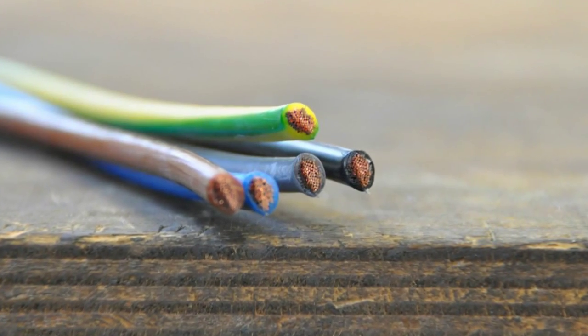Electric current is electric charge in motion. It can take the form of a sudden discharge of static electricity, such as a lightning bolt or a spark between your finger and a ground light switch plate.